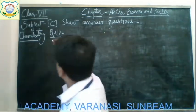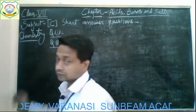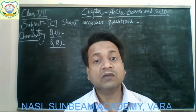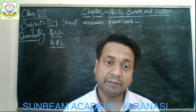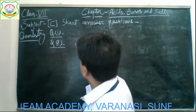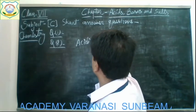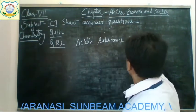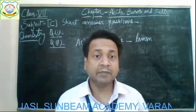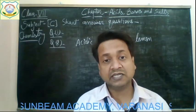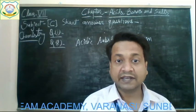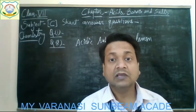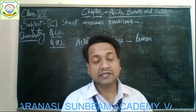Question number two: Name one each of acidic and basic substances. You have to write one substance that is acidic and one that is basic. For acidic substance, you can write lemon — lemon is acidic because citric acid is present in it. You can also write orange, tamarind, grapes, or apples, as acid is present in all these substances.